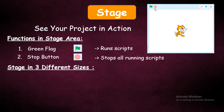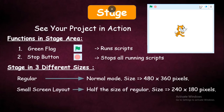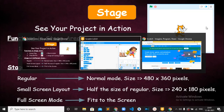You can view the stage in three different sizes. There are three options: the middle option is the default, which is regular — normal mode, with a size of 480 pixels wide and 360 pixels tall. The first option is the small screen layout, which is 240 pixels wide and 180 pixels tall. Whenever you want to increase the space in the code area, you can use this small screen layout. The last option is full screen mode, which makes the stage bigger to fit the screen.